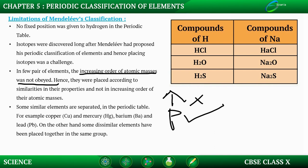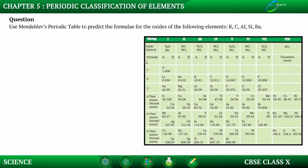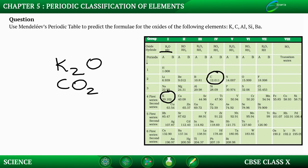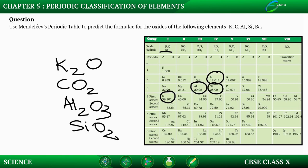Practice question: Use Mendeleev's periodic table to predict the formula of the oxides of the following elements. K is in group 1, so its oxide is K₂O. Carbon (C) is in group 4, so its oxide is CO₂. Al is in group 3, so its oxide is Al₂O₃. Si is in group 4, so its oxide is SiO₂. Ba is in group 2, so its oxide is BaO.